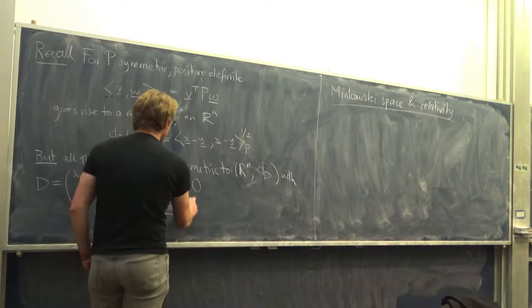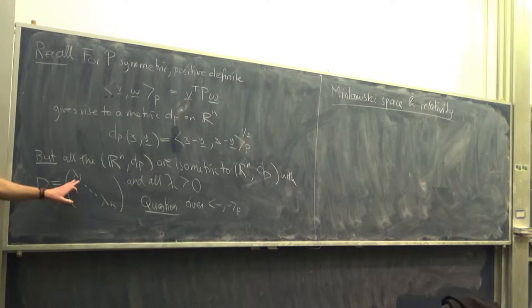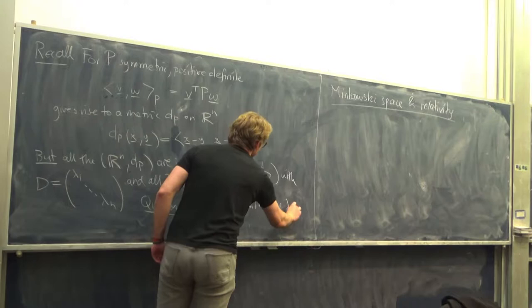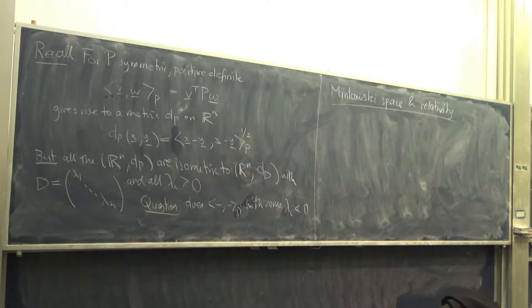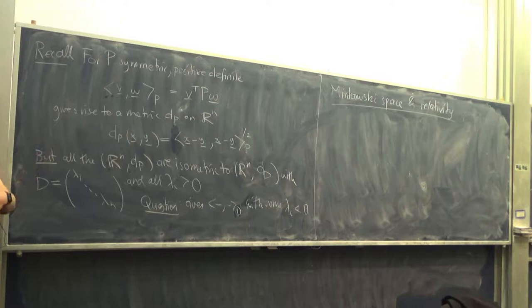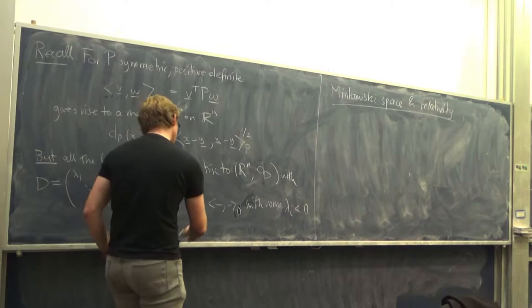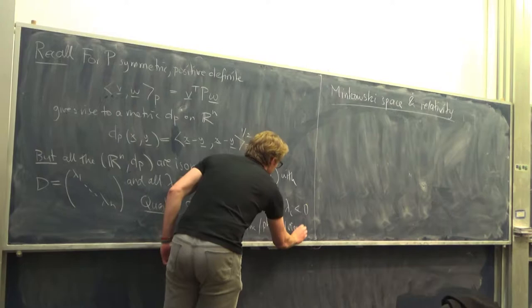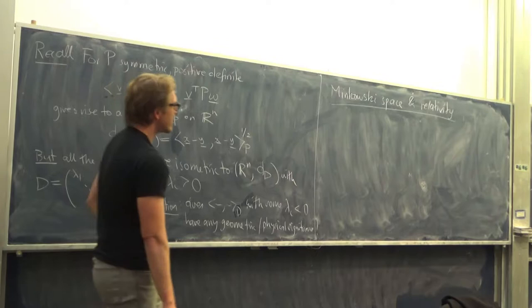This naturally leads us to a question: suppose I just make one of these diagonal entries negative? Take a diagonal matrix — don't allow any entries to be zero — but suppose some entries are positive and some are negative. We can still write down the bilinear pairing; it doesn't give rise to a metric anymore. But we have a vector space together with a non-degenerate bilinear pairing. Does that structure have any geometric or physical significance? The answer is yes — that's relativity. That's what we'll discuss today.